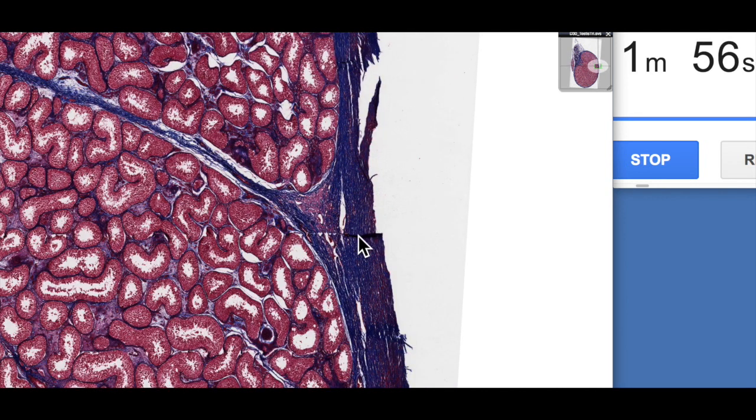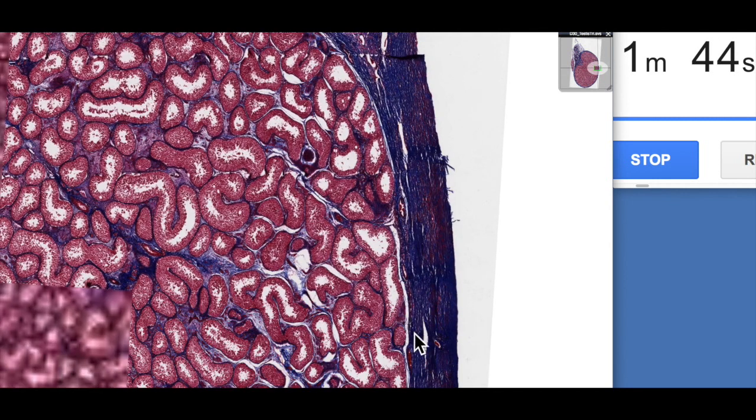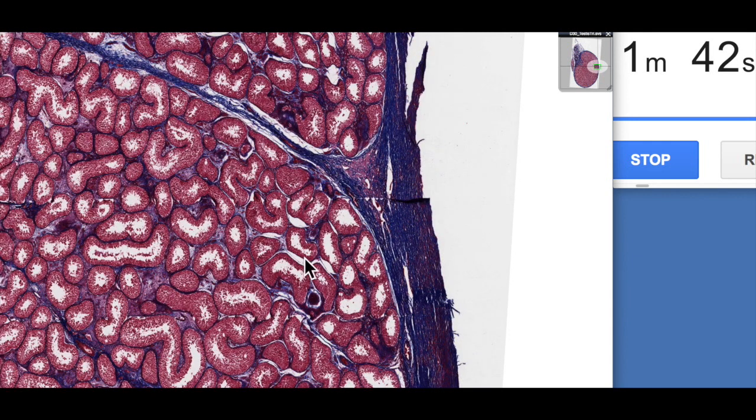Now the tunica albuginea plays an important role in the structure of the testis, but it also throws in these connective tissue septa. You can see one of these septa here. And what the septa do is divide the testis into lobules. And within each lobule you have two to three seminiferous tubules.